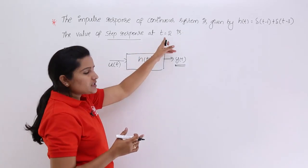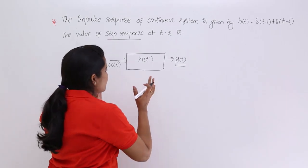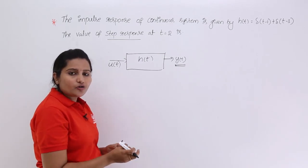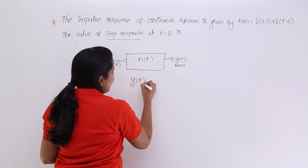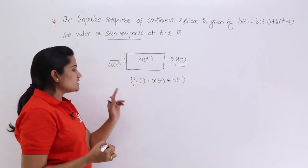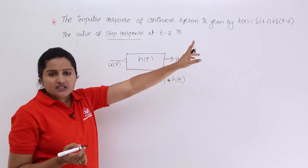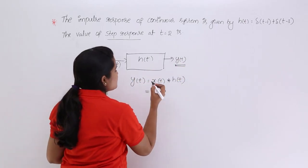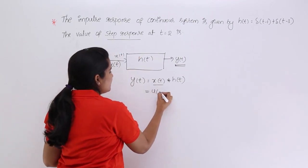First we are going to deal with the step response output of the system. For a continuous time system, the relation between output, input, and impulse response is y(t) = x(t) * h(t). We know the value of h(t) — they have given an expression for h(t) — so we substitute here. The input signal x(t) = u(t).